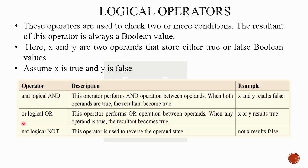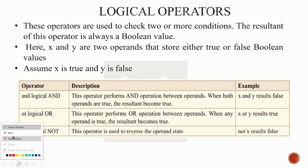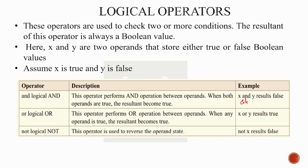In Python, logical operators are: x and y, x or y, and not x. If x is true and y is false, then x or y is true. Not x, where x is true, gives false. The operator 'not' inverts the boolean value.